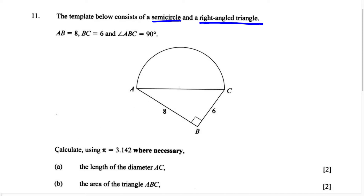The question goes on to say: calculate using PI equals 3.142 where necessary. Part A asks for the length of the diameter AC. This diameter AC is for the semi-circle, but it is also a side of the right-angled triangle. We have two sides and need to find the third side.